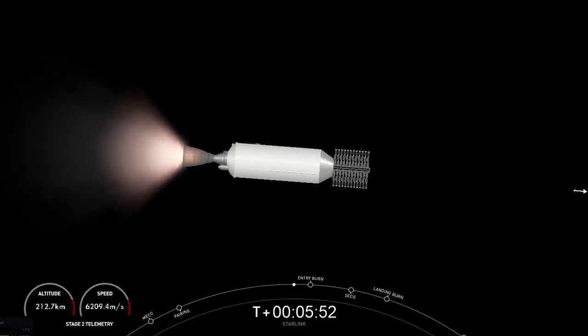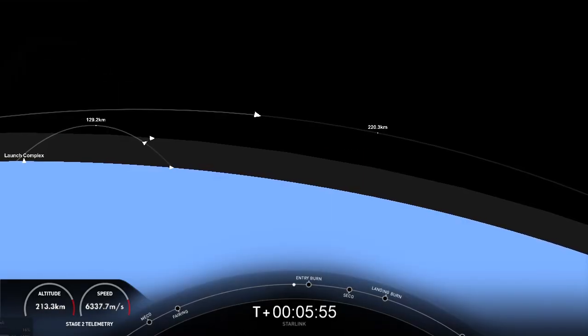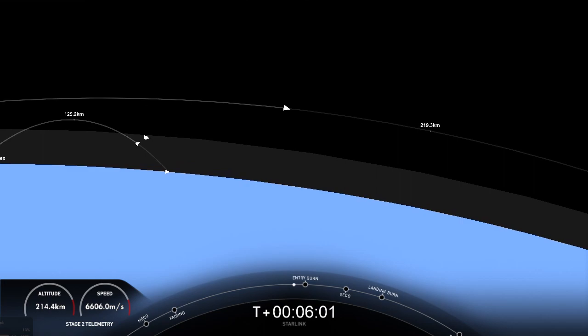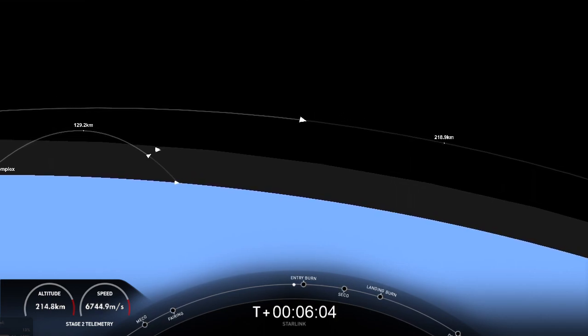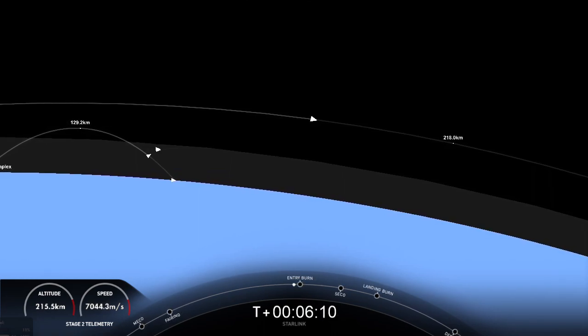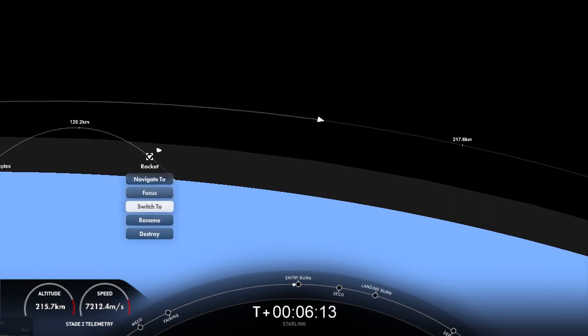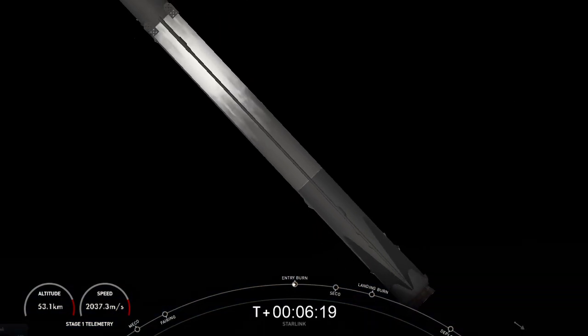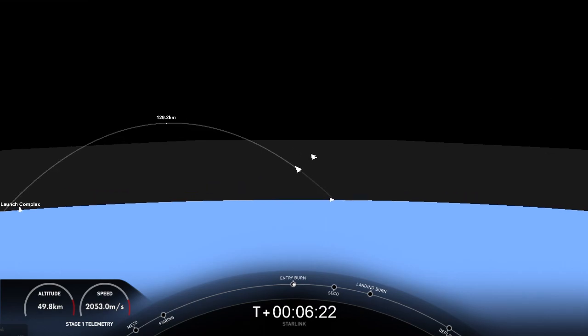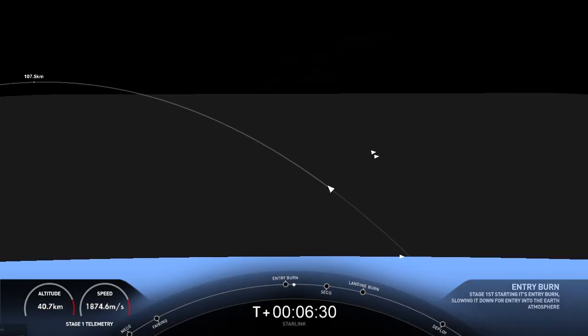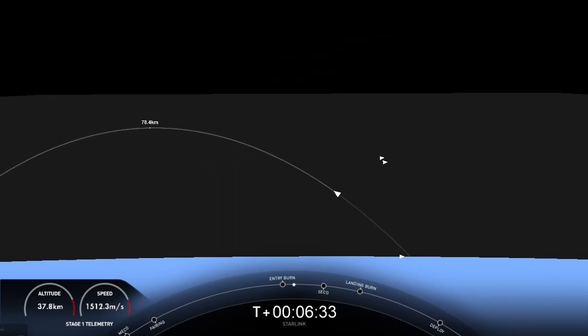In about 30 seconds, we'll have Stage 1 entry burn startup. This is a three-engine burn that will continue as Stage 1 enters the atmosphere and slows it down for atmospheric entry. Stage 1 entry burn startup. Stage 1 has ignited its engines and slowing down. It's a 20-second burn.